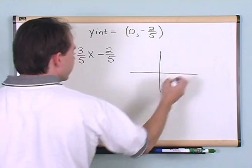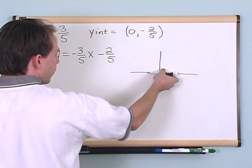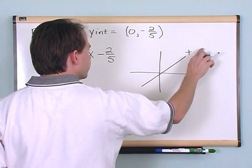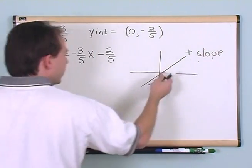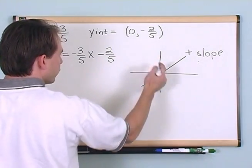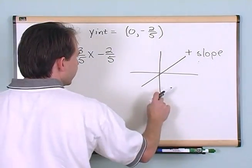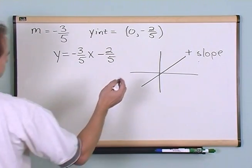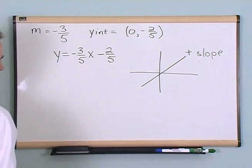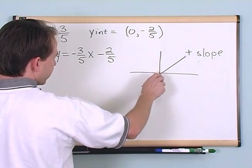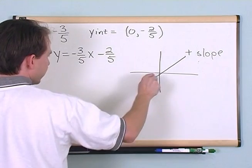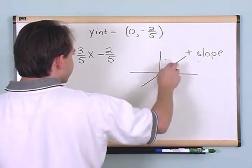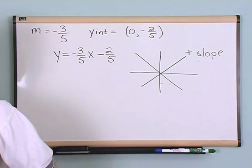Most of the lines we've talked about have had positive slopes. If the slope is zero the line is horizontal. As you slope upward you have a positive slope, because rise over run gives you a positive divided by a positive. A negative slope means the rise is negative and the run is positive, so lines with a positive slope go upward to the right, while lines with a negative slope go downward to the right.